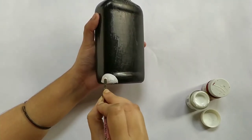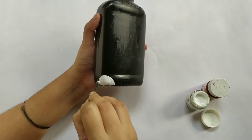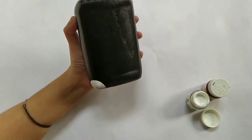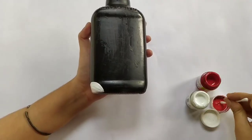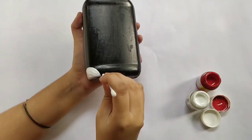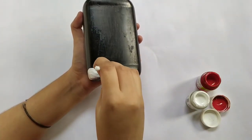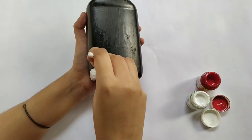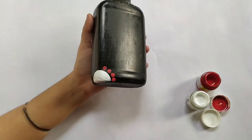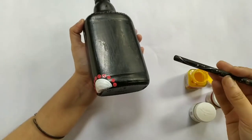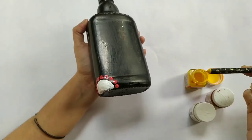I am not using any dotting tools here. I am just using all the materials which can be found easily in our homes. Like this, I am using a Q-tip for making dots. Back side of a pencil for bigger dots.